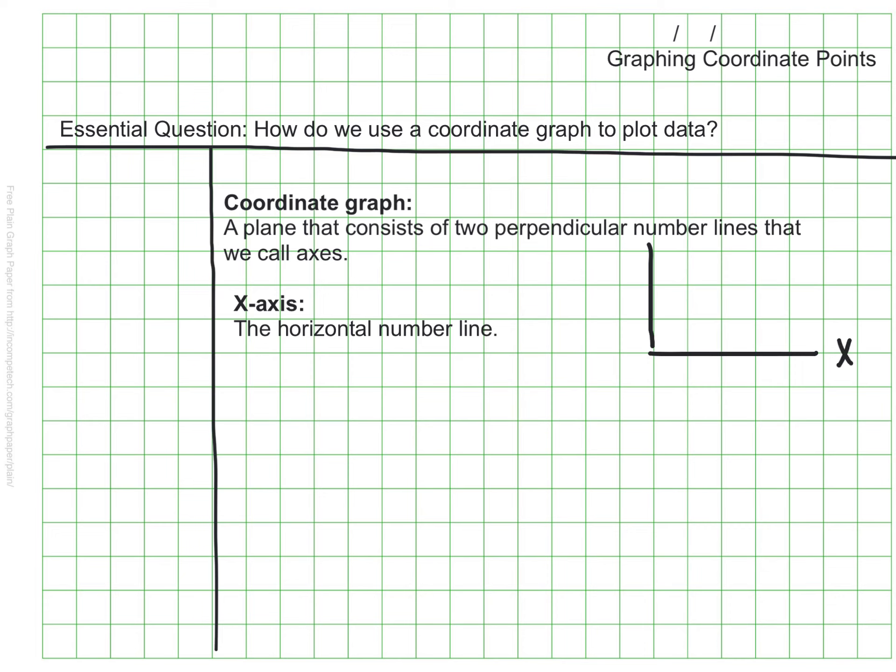This is also known as the independent variable. We also have a y-axis. The y-axis is the vertical number line. So it belongs over here. It's this vertical one. This is also known as the dependent variable. We'll be talking more about those terms independent and dependent variable a little bit later, but I just want to point those out so that those are terms you're familiar with.